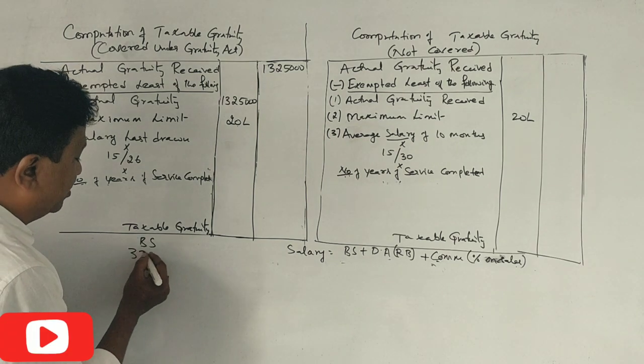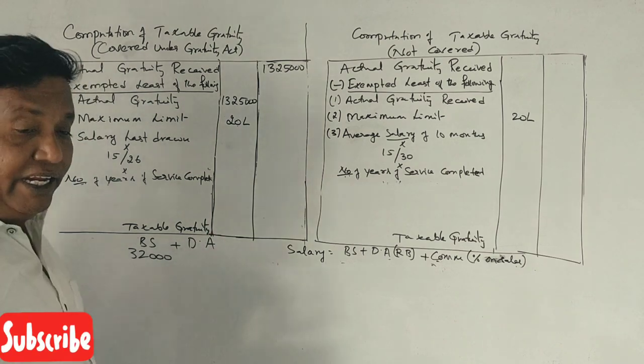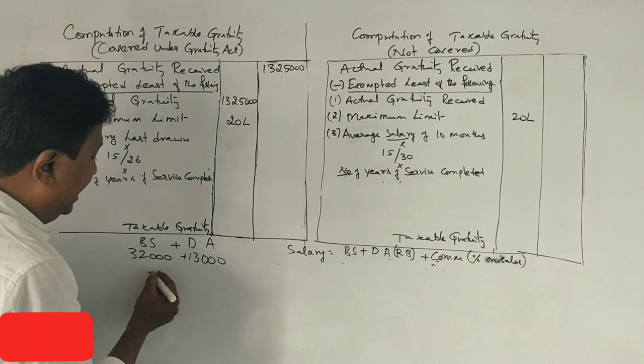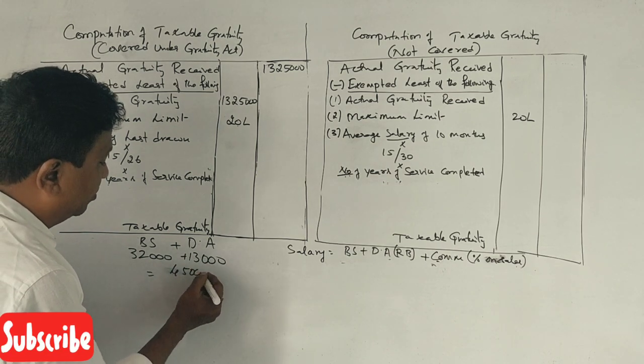So 32,000, DA is 13,000. So total salary is 45,000.